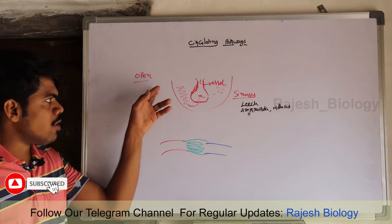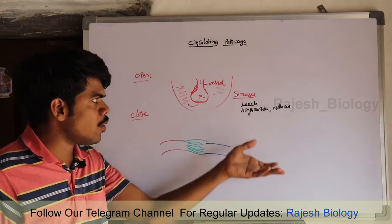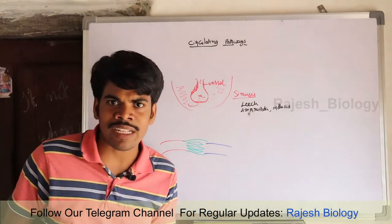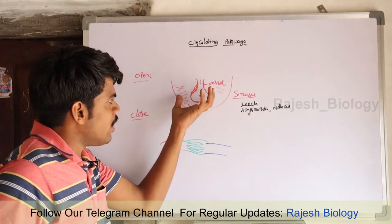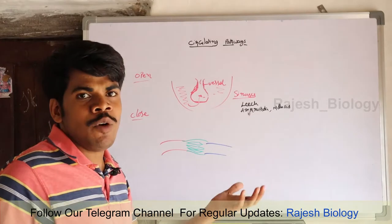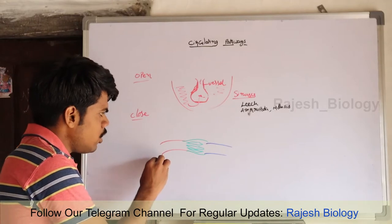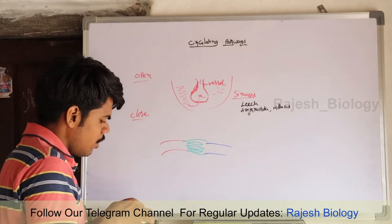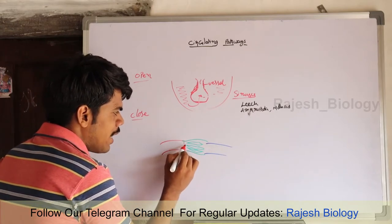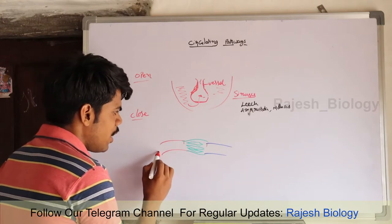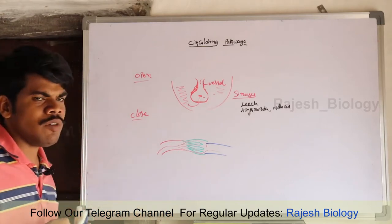In the open type of circulatory system, blood flows into the blood vessels and from there enters into the large body spaces known as sinuses. The vital organs present within the body are bathed in hemolymph — the blood is known as hemolymph in open type of circulation. In the closed type, the heart pumps blood into blood vessels, arteries and veins are connected by blood capillaries, and the blood never enters into the body spaces.